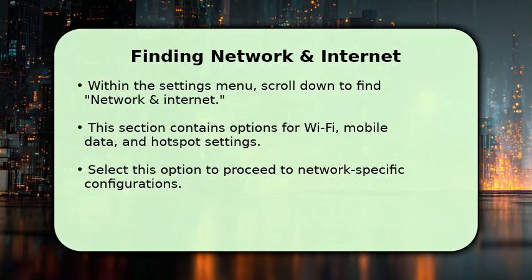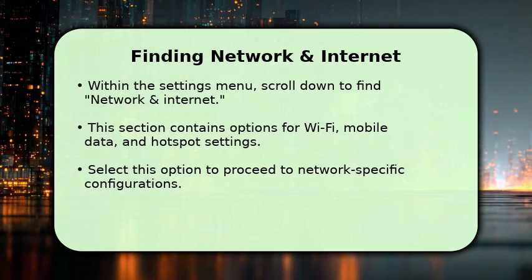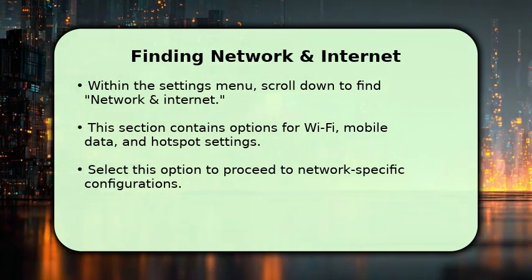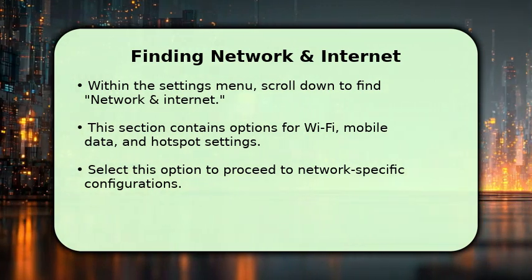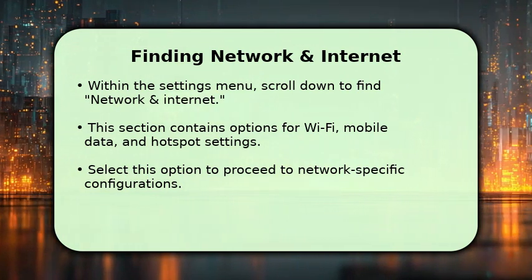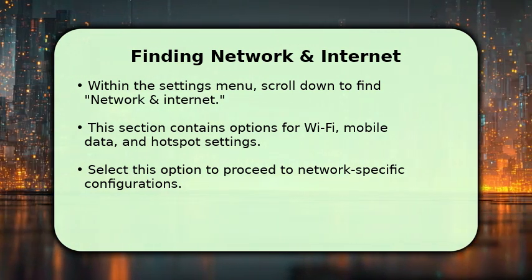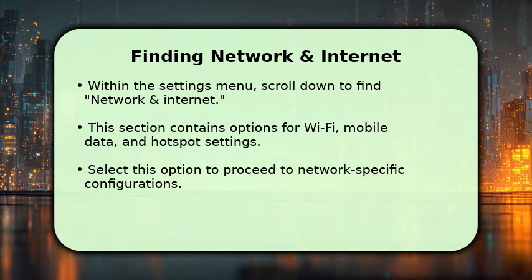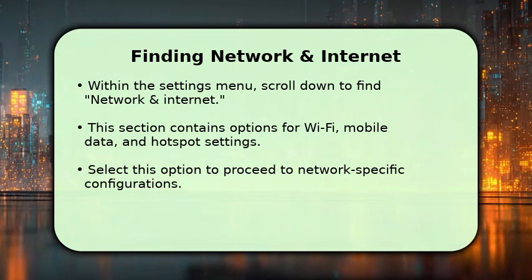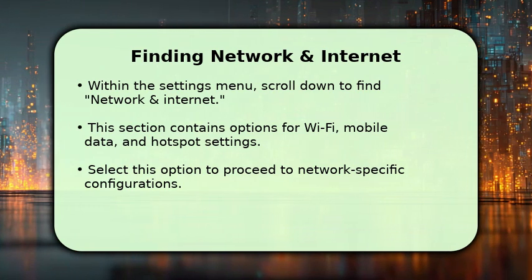Once in the settings menu, scroll down until you locate the Network and Internet option. This section manages all your device's connectivity features, including your Wi-Fi connections, mobile data, and even your personal hotspot settings. Tap on Network and Internet to access these crucial network configurations.